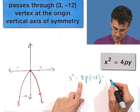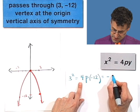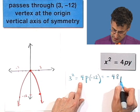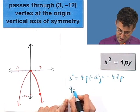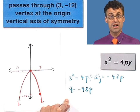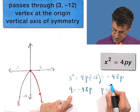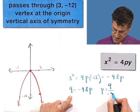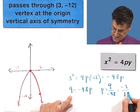Because 3 comma negative 12 is on the graph. Okay, so what do I see here? I see that this equals negative 48p. And so what do I see? I see this is 9. So I see 9 equals negative 48p. If I solve for p by dividing both sides by negative 48, I see that p equals 9 over negative 48, which equals negative 3 sixteenths.